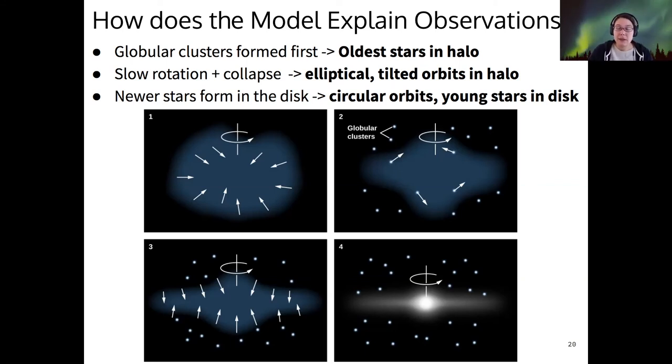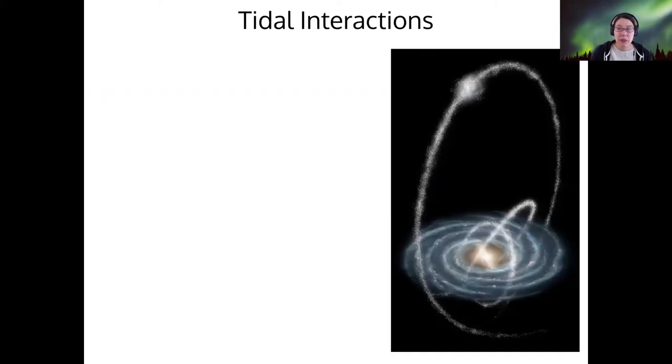So that's the model. This is not necessarily the whole story, but it does do a good job of explaining our observations. If you've taken 122, you'll notice that this looks an awful lot like the formation process for a star and the planets around it, right? So this is echoed in the solar system formation.